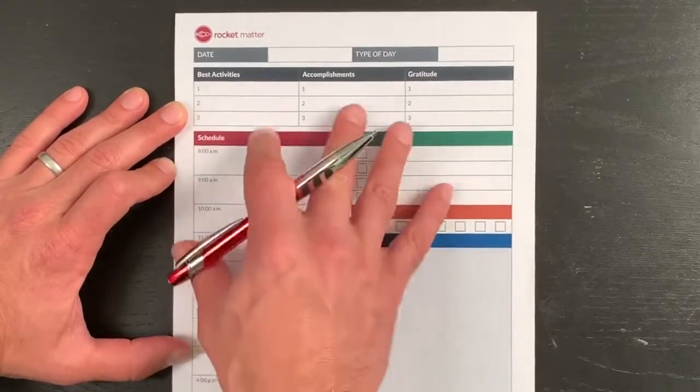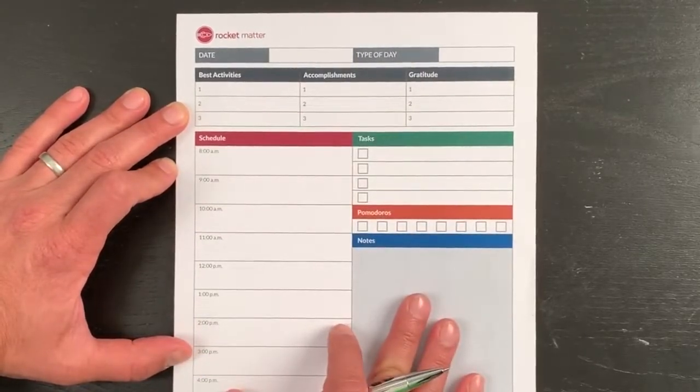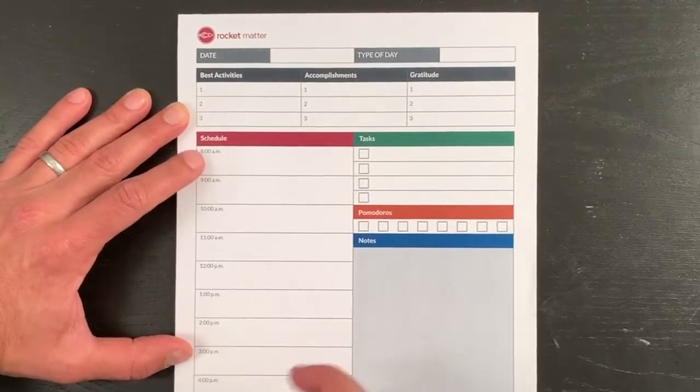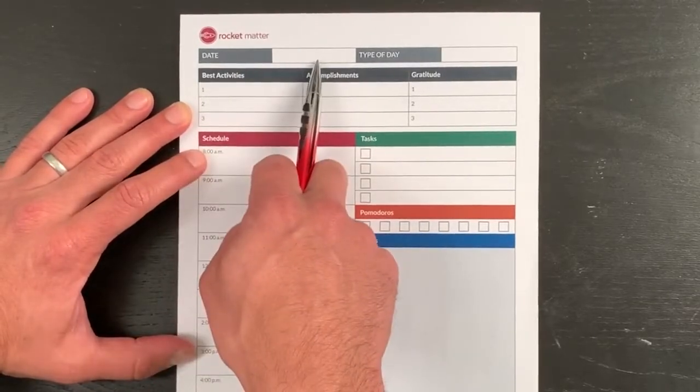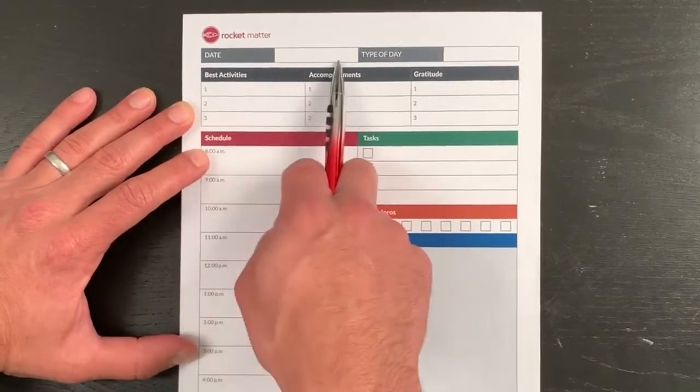It's actually pretty simple, and it looks like there's a lot of information, but it really takes me only about five minutes to fill out. Up here I put the date, and I like that because it just gets me started.